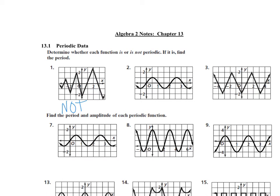This one is periodic because you can see that it follows the same motion — it goes up, down, and comes back down to the same spot. This other one goes up and down, but it goes up and down to different spots, so it's not periodic.